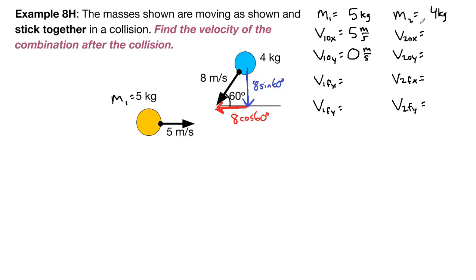So, at the beginning of the problem, we have these two pieces of information. The 8 cosine 60 degrees is the x component. It's 4.0 meters per second, but it's pointing to the left, so we have to call it minus because we've already decided that the to the right direction is positive.